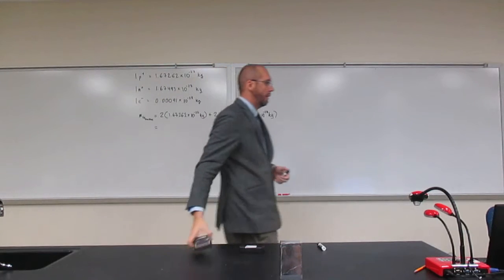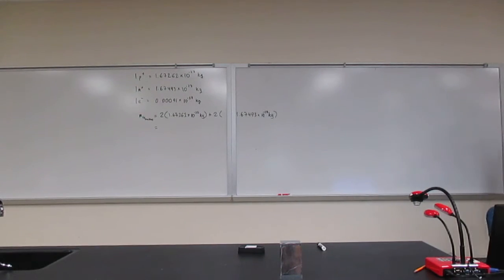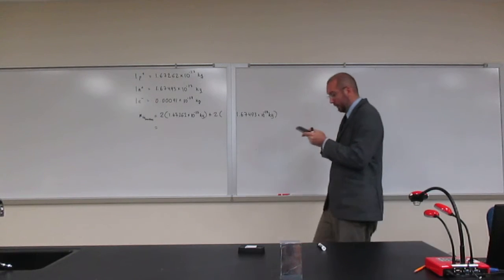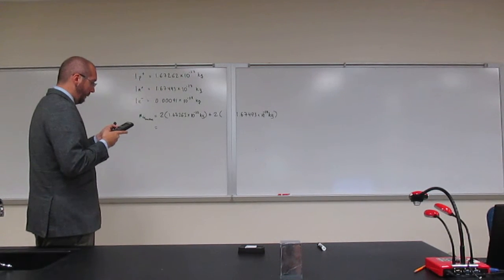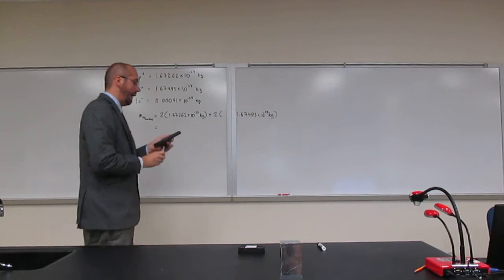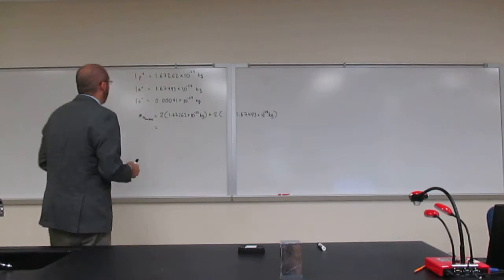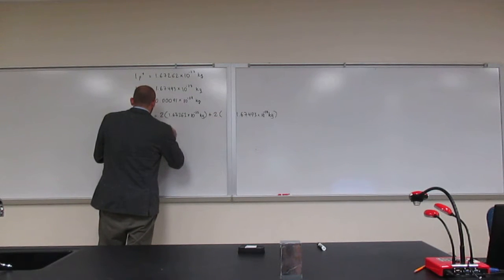So the first thing we want to do is figure out the mass of that nucleus, okay? And so let's do that together. Plug it into your calculator. Now, two times 1.67262 times 10 to the negative 27 plus two times 1.67493 times 10 to the negative 27 kilograms. Okay, and I get a number, 6.6951.